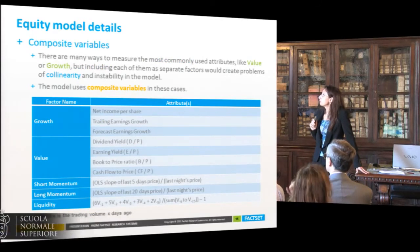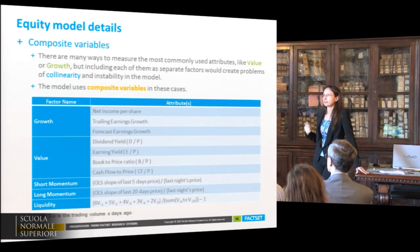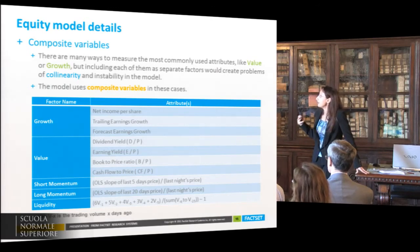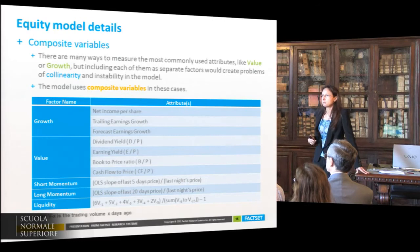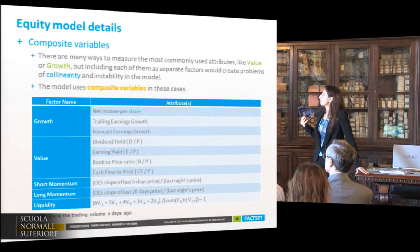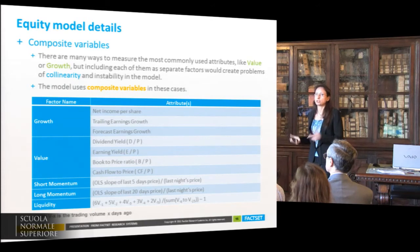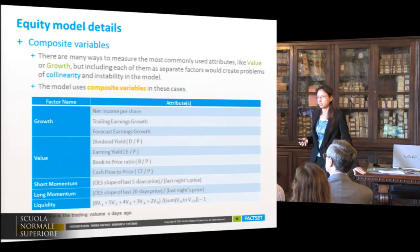The active factors we mentioned are those commonly used in stock selection: value and growth, momentum, and others. We know that for value and growth, there can be different measures. If we use all of them simultaneously, we have problems of instability and collinearity in the model. So what the model does is first create a composite measure and then use that composite as a factor in the model.